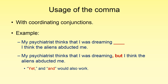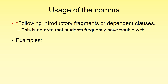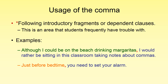Other uses of the comma are related to fragments. When we're thinking about commas, think about fragments unless we're talking about coordinating conjunctions. Commas are generally used to separate fragments that come at the beginning, end, or sometimes inside independent clauses. For introductory fragments — an area students often struggle with — consider: 'Although I could be on the beach drinking margaritas, I would rather be sitting in this classroom taking notes about commas.' The first clause in green is a dependent clause, which is a type of fragment, followed by a comma. This is correct.